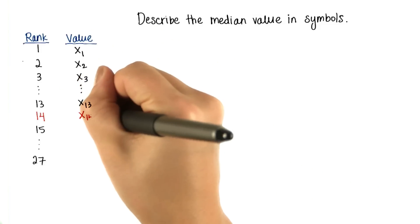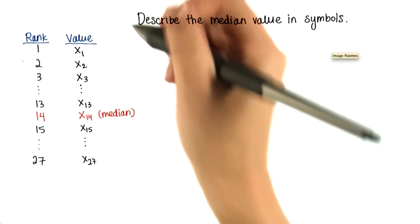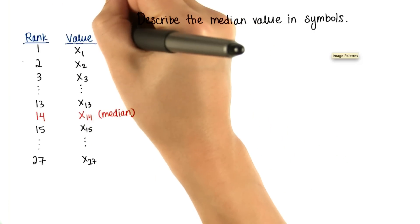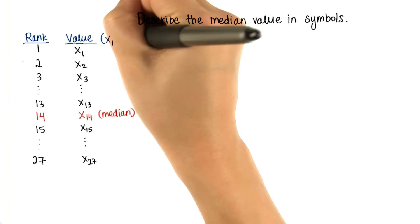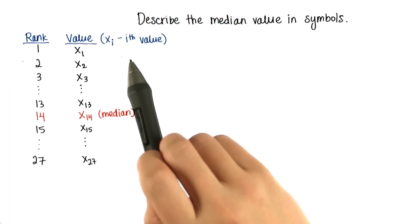In the case of Udassian's Facebook friends, x sub 14 is the median. And remember that any value, we can generically denote x sub i, where x sub i is the i-th value. Yes, we do say i-th.